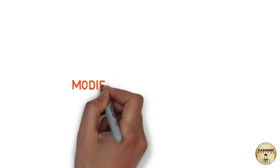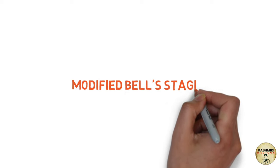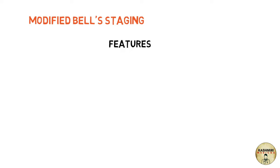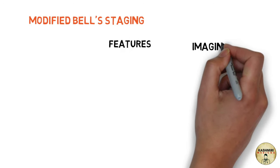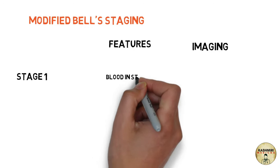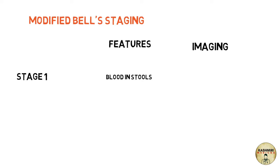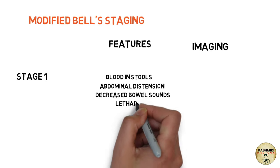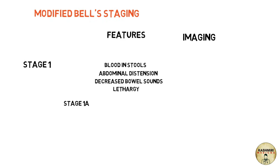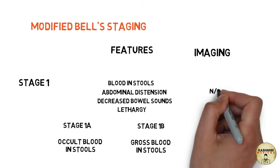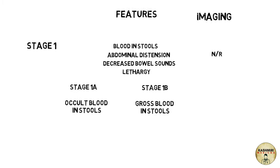There is another staging for necrotizing enterocolitis known as the modified Bell staging. It associates clinical features and imaging findings to stage the disease. In stage one, features include blood in stools, abdominal distention, decreased bowel sounds, and lethargy. Stage one is subdivided into 1A — occult blood in stools — and 1B — gross blood in stools. The imaging in stage one is normal.